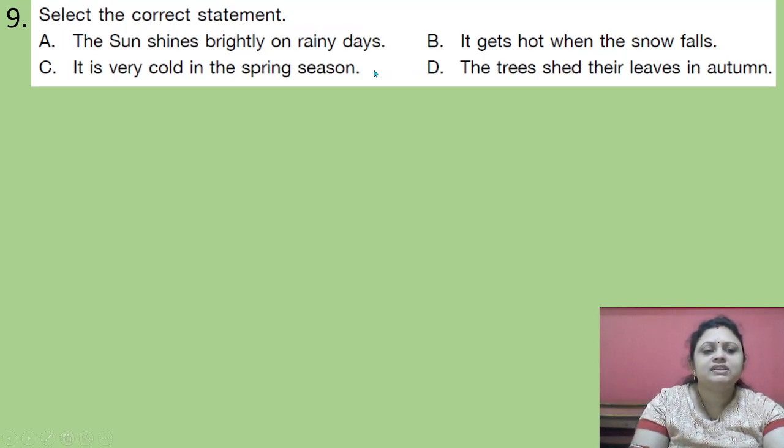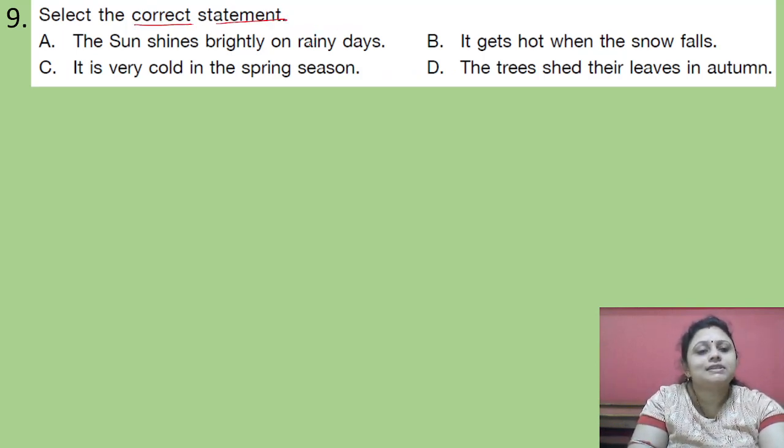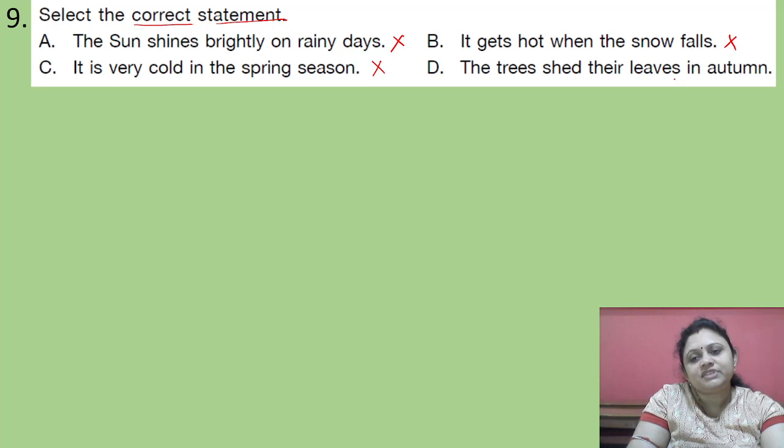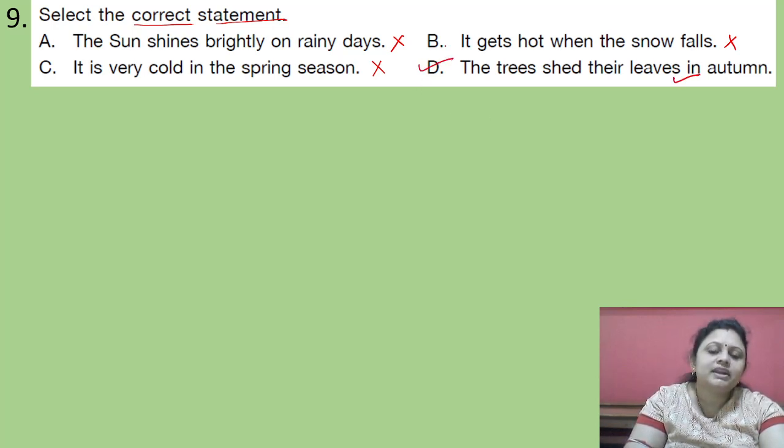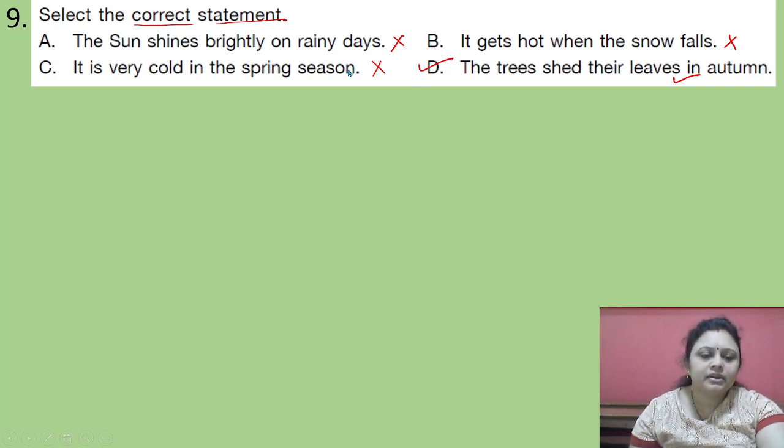Coming to the next question. Select the correct statement. Options are A. The sun shines brightly on rainy days. B. It gets hot when the snow falls. C. It is very cold in spring season. D. The trees shed their leaves in autumn. So we have to find out the correct statement. The sun shines brightly on rainy days. No. The sun shines brightly on summer days. It gets hot when the snow falls. No. When snow falls, it gets cold. It is very cold in spring season. No. It is very cold in winter season. The trees shed their leaves in autumn. Yes. This one is correct. So correct answer is option D.